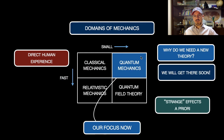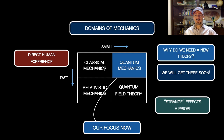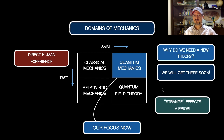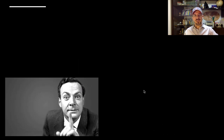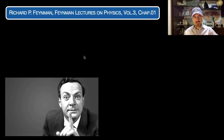Classical mechanics cannot describe some effects — in other words, there are limitations of this theory — and we need something else to describe the effects that we do observe in the laboratory. Let me show what Richard Feynman said in the famous Feynman Lectures on Physics, chapter one of the third volume.